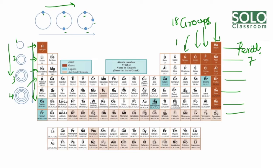For example, Group 1 elements are: Hydrogen, Lithium, Sodium, Potassium, Rubidium, Cesium, and Francium. Group 2 elements are: Beryllium, Magnesium, Calcium, Strontium, Barium, and Radium. All atoms in Group 1 have one electron in their outermost shell, and all atoms in Group 2 have two electrons in their outermost shell.